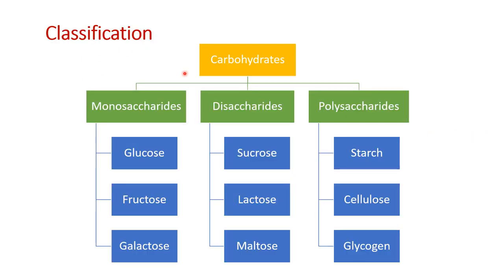So first the classification. Carbohydrates are classified into three major classes: monosaccharide, disaccharide, and polysaccharide. Monosaccharides are those which cannot be hydrolyzed further — examples are glucose, fructose, galactose. Disaccharides, from the name itself, have two monosaccharide units — examples are sucrose, lactose and maltose. Polysaccharides — poly means many — are carbohydrates made up of many monosaccharide units, such as starch, cellulose and glycogen.